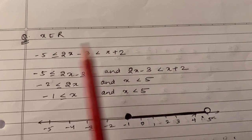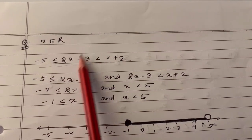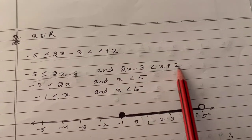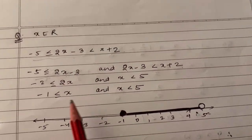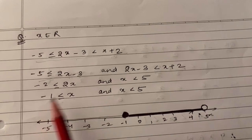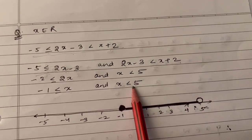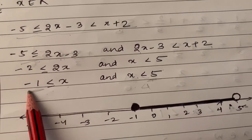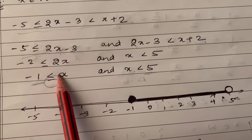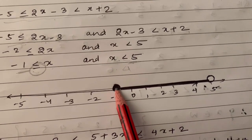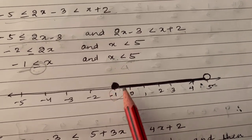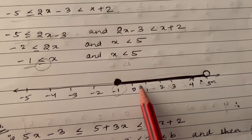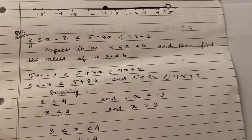For the compound inequality on the number line — dividing into two parts: −5 ≤ 2x − 3 and 2x − 3 < x + 2 — solving separately gives x ≥ −1 and x < 5. Since minus 1 is included, the circle above −1 is closed (filled). Since 5 is not included, the solution set extends from −1 to 4 on the number line.